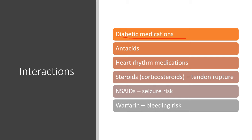Interactions to watch for: diabetic medications, given the potential to affect glucose metabolism; antacids, which reduce absorption; cardiac medications, since heart rhythm may need close monitoring. Corticosteroids like prednisone can increase the risk of tendon rupture when used together. NSAIDs such as ibuprofen or naproxen have a potential to increase seizure risk. Warfarin combined with levofloxacin can increase bleeding risk, as warfarin tends to interact with many antibiotics.